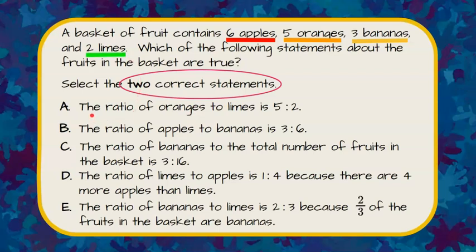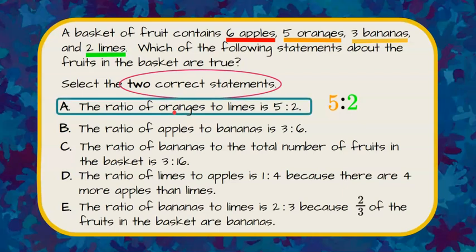Our first statement is: the ratio of oranges to limes is five to two. If I look here, my oranges are five and my limes are two — so five to two. Statement A is indeed true.